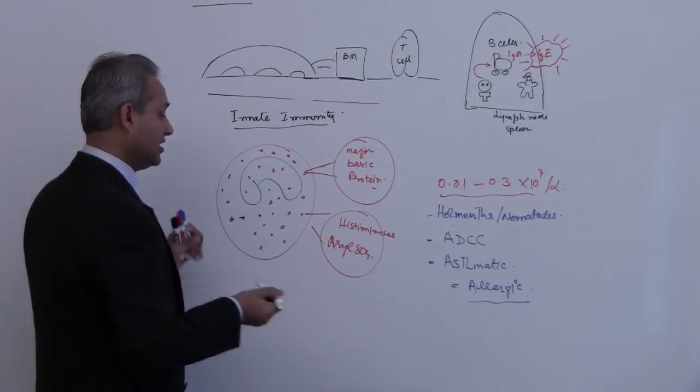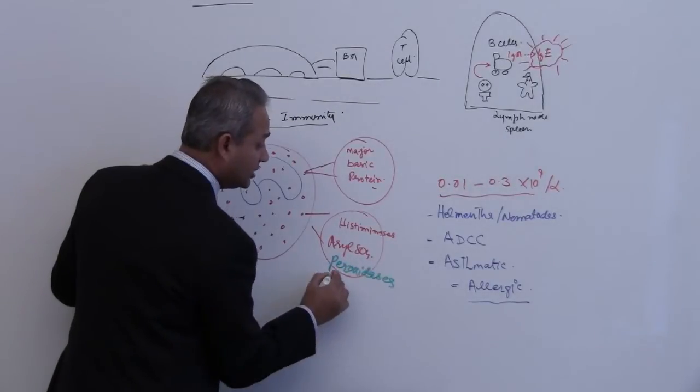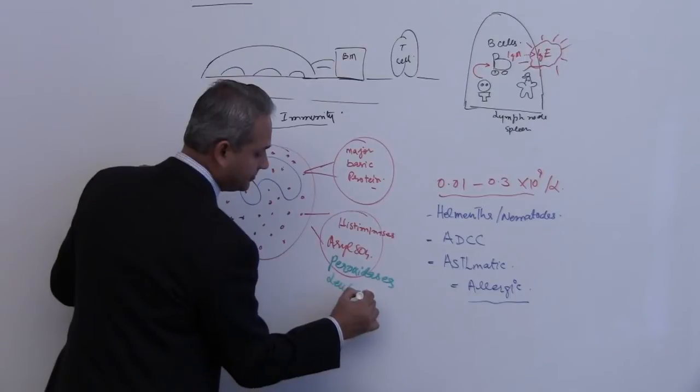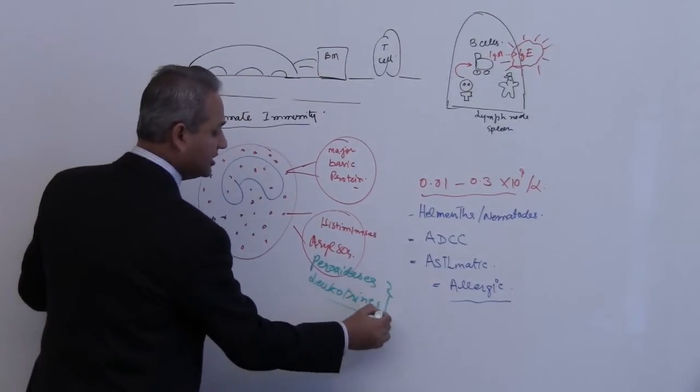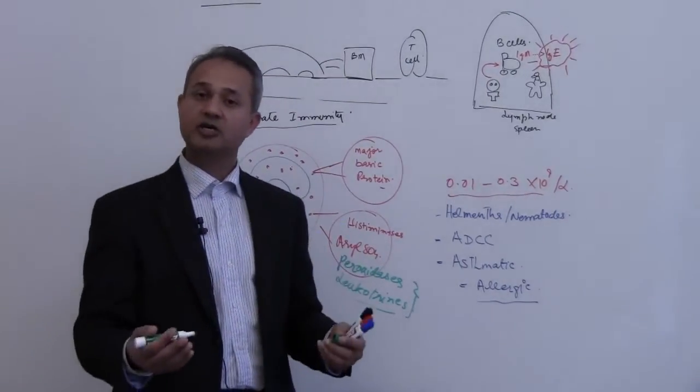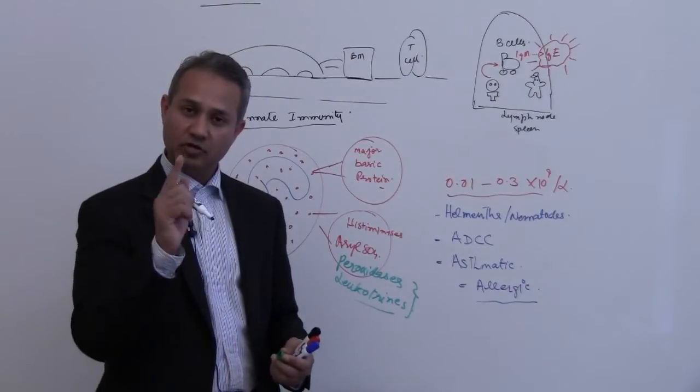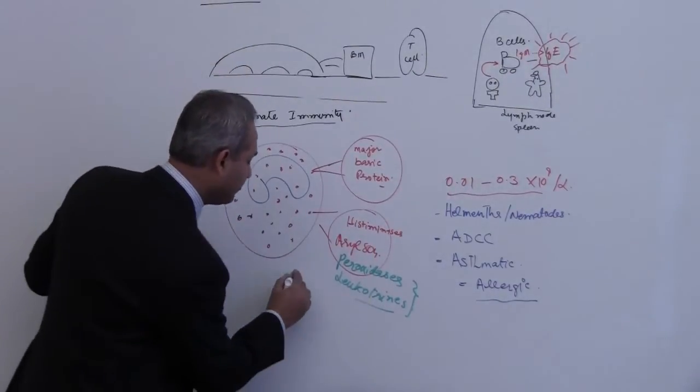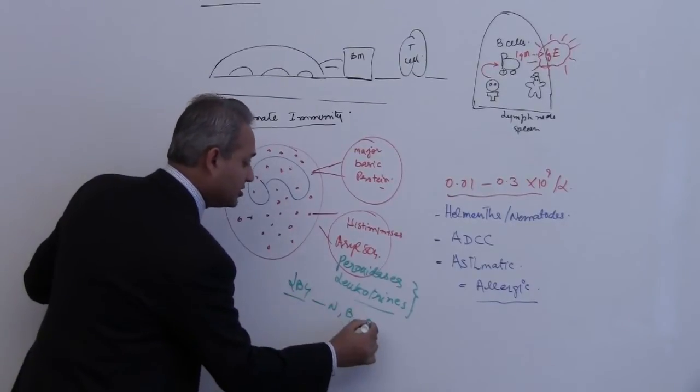In addition to that, there are peroxidases and leukotrienes. So keep an eye on these two guys because these are the ones which are going to cause tissue damage and cause allergic reaction and start the inflammation. Remember leukotriene B4 attracts neutrophils, basophils and eosinophils.